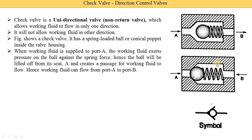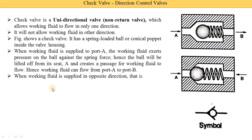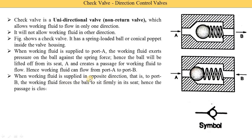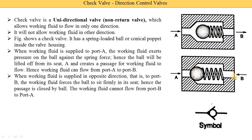The second case is when fluid is coming from port B — the arrow indicates flow toward port B, meaning oil is entering from port B. When the working fluid is supplied in the opposite direction — that is, from port B — the working fluid force causes the ball to sit firmly in its seat. Hence, the passage is closed by the ball and the working fluid cannot flow from port B to port A. The fluid coming from port B applies force on the ball, the ball moves toward its seat, and the passage is closed.